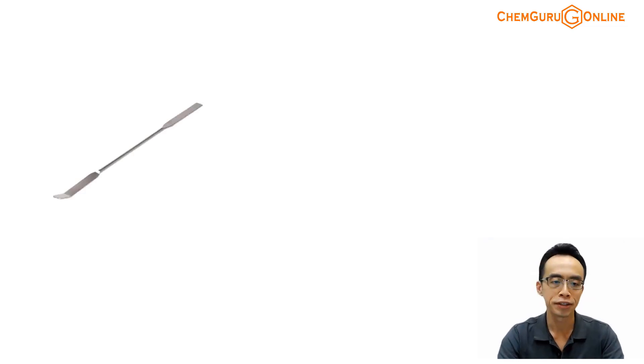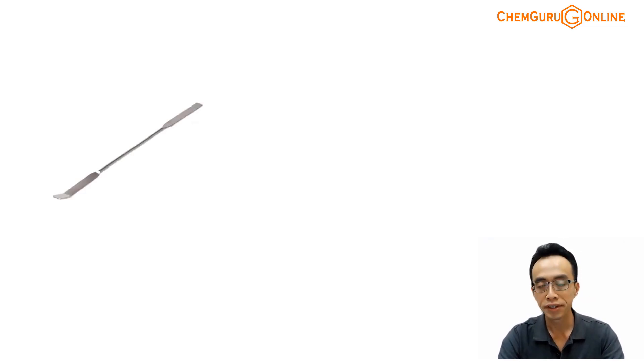What we have here is a spatula. We use it very often in the chemistry lab — used to stir solutions, especially in a test tube, which is very narrow. The spatula is usually made up of nickel.